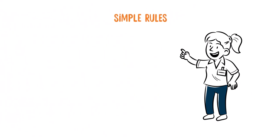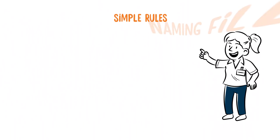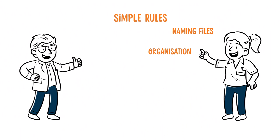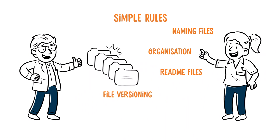Common and documented rules have to be set up in your group for file naming and organisation. Simple rules include meaningful and consistent file and folder naming, file versioning, and the use of readme files to document the file content and organisation.